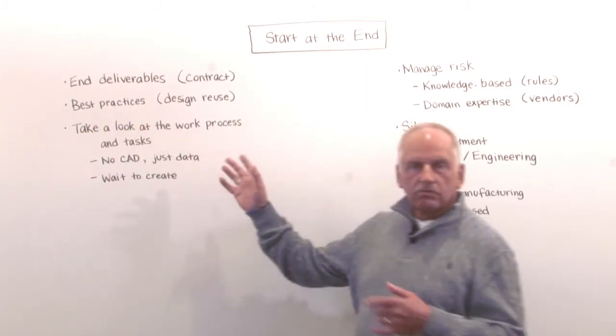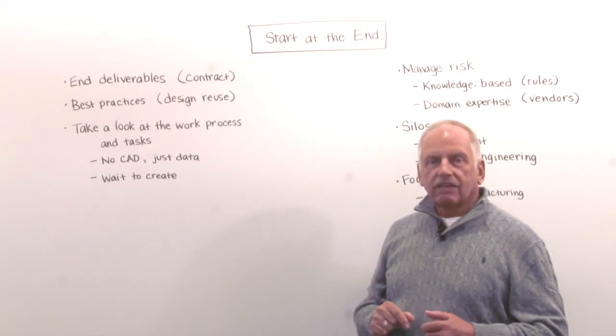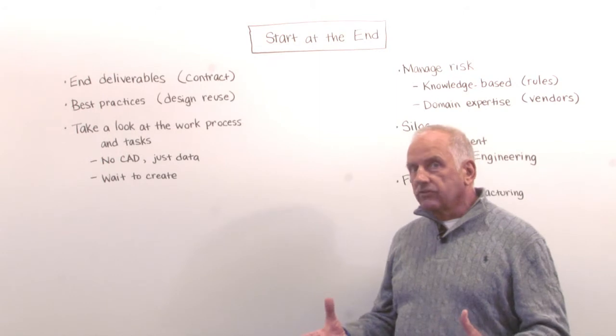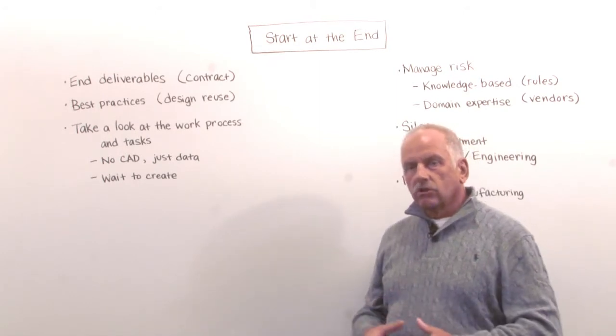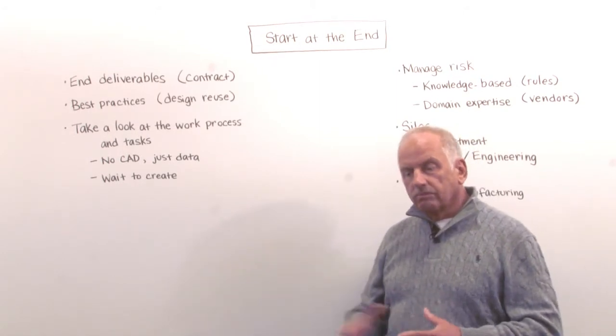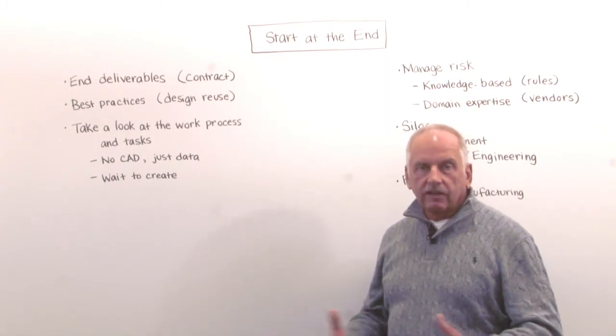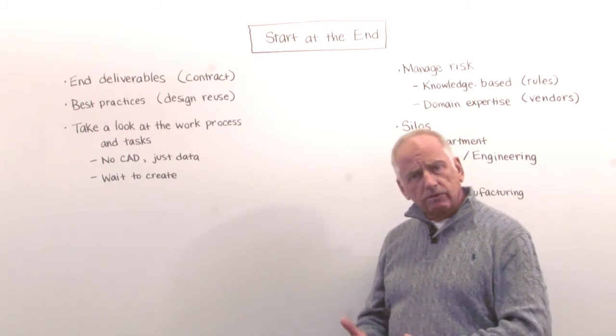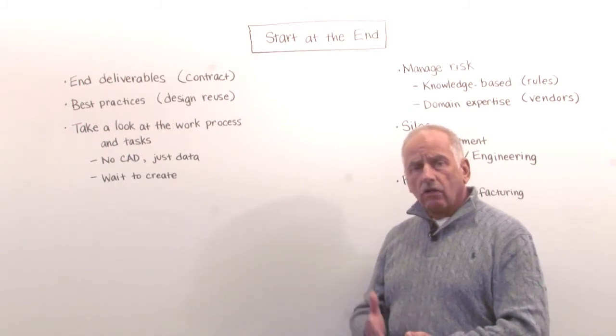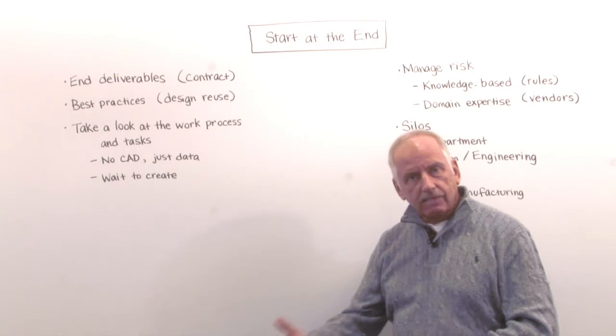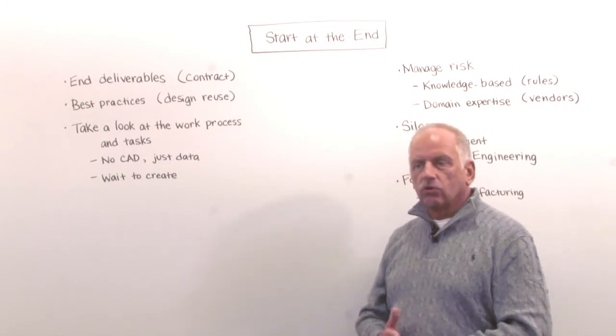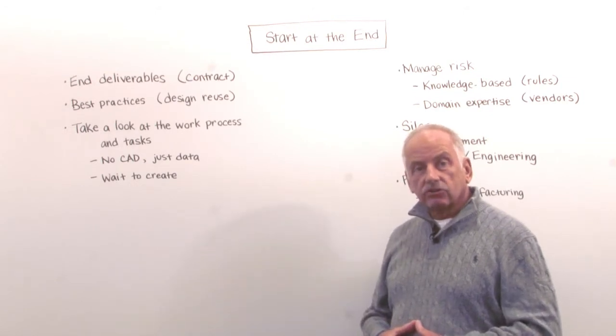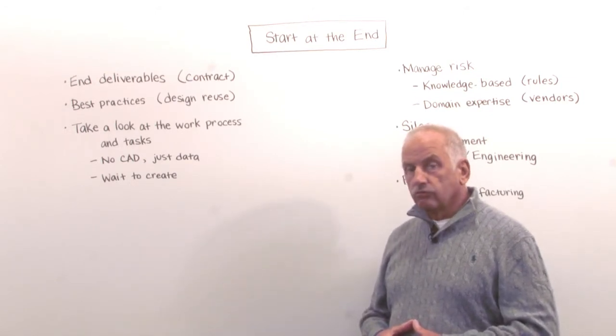Some of the things I wrote down: first of all you have to look at the end deliverables. That sounds obvious and maybe you don't know all of them, but certainly in certain contracts or based on previous designs and experience you know what kind of deliverables you need to create on projects. If you know that, then you can already start to create some content for symbol libraries or pipe specs or make sure that you have your content ready to support these deliverables that you have to create for your project.